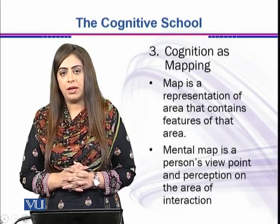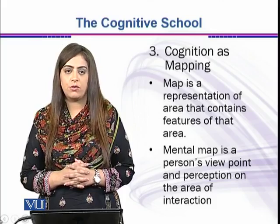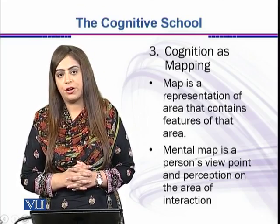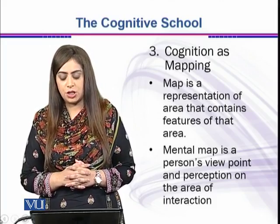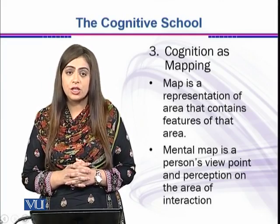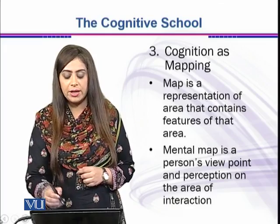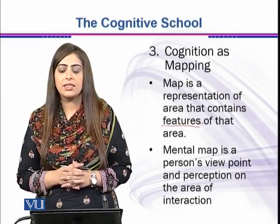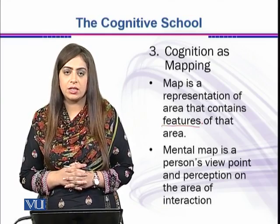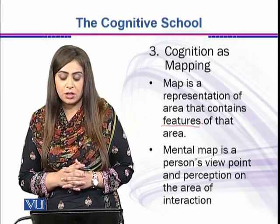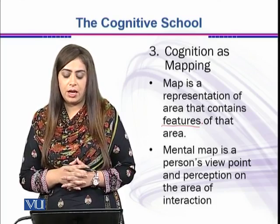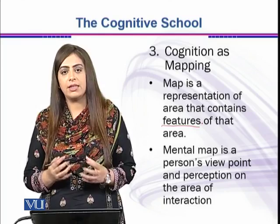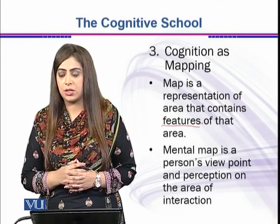Seeing cognition as mapping — before going into detail, we must know what a map is. Taking the definition from geography, a map is a representation of an area that contains features of that area. The important aspect to be considered in this definition is features. It means that a map holds certain characteristics and features that are representative within that map.